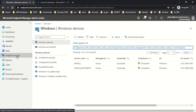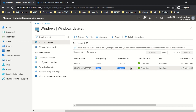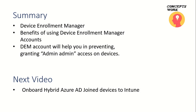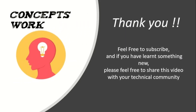One last thing to verify is the ownership of this device. Going to Devices, then Windows — 'enrollment restriction' is showing as corporate owned. Quick summary of what we've discussed: device enrollment manager, the benefits of using DEM, and how you can implement DEM to adhere to the least privilege standard. In the next video I'm going to talk about how to onboard hybrid Azure AD joined machines to Intune so you can leverage compliance policies or push updates from Intune instead of an on-premises solution. If this channel is helping you learn something new, please feel free to subscribe — thank you so much.